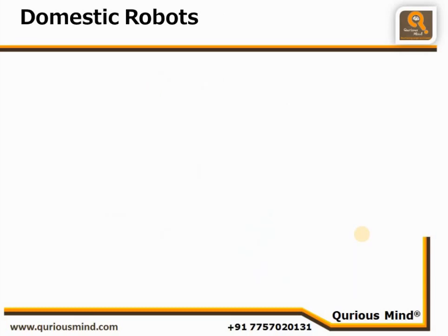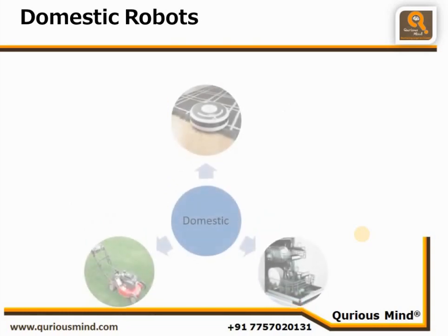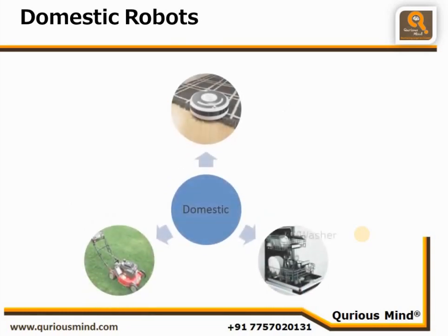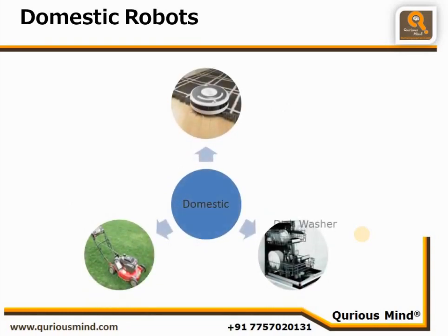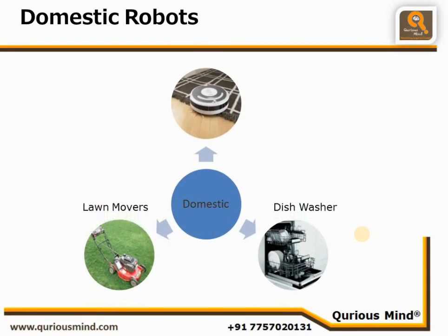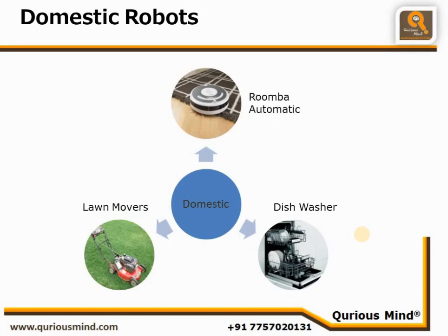Domestic robots have entered our lives long ago. Dishwashers, washing machines, and lawn mowers have occupied our lives for a while now. The latest addition is the automated home cleaning machine, Roomba.